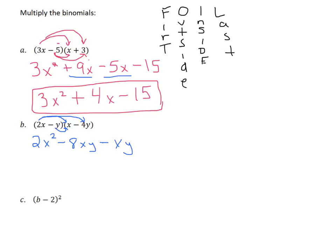And finally, negative y times negative 4y. Negative times a negative is a positive. And we have a 4. And then y times y is y squared.